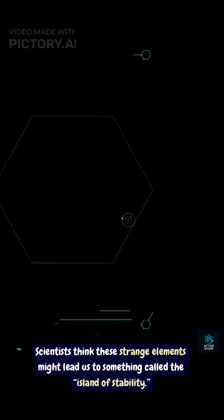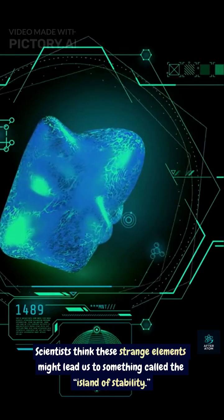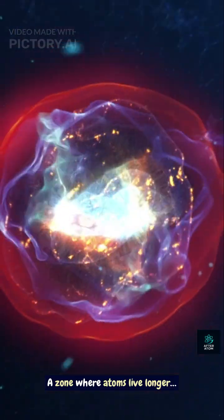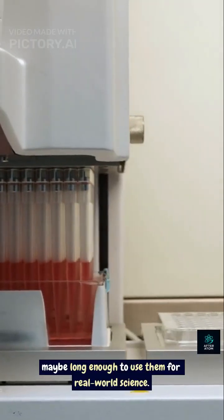But here's the twist. Scientists think these strange elements might lead us to something called the island of stability, a zone where atoms live longer, maybe long enough to use them for real-world science.